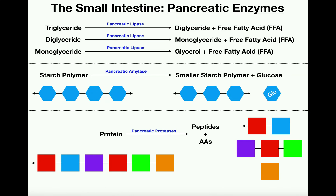Pancreatic lipases are released from the pancreas and degrade triglycerides into a diglyceride and a free fatty acid. Those diglycerides can be degraded further into a monoglyceride and another free fatty acid, and then monoglycerides can be further degraded into glycerol and a free fatty acid. The goal is to split off all the free fatty acids from the triglyceride — a triglyceride has three fatty acids, so there can be three separate reactions. The fatty acids along with glycerol can then be absorbed, though we'll cover lipid absorption in a separate video since it's quite complicated.